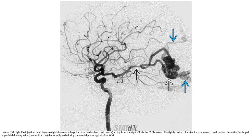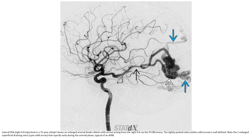DSA. Lateral DSA in the same 15-year-old shows an enlarged arterial feeder arising from the right ICA via the posterior communicating artery. The highly packed nidus is well defined. Note the two enlarged superficial drainage veins that opacify early during the arterial phase, typical of AVM.